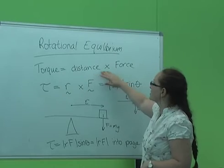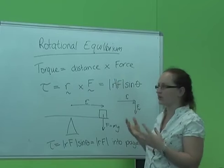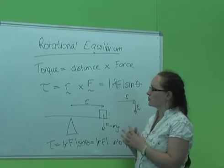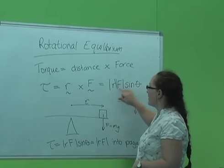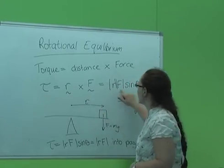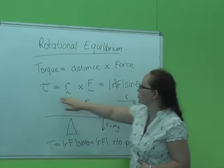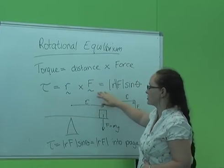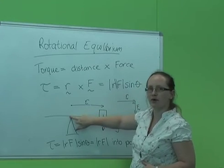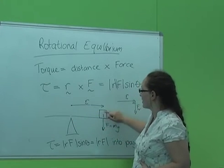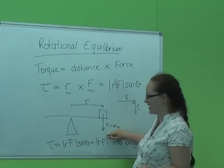Torque is given by distance cross force. This symbol is a cross product or vector product. To work out the cross product, we take the magnitude of these two vectors and the sine of the angle between them. So torque equals the distance cross the force. The distance is given from the pivot point to where the force is acting. And the force in this case is just due to gravity, the weight force acting downwards.